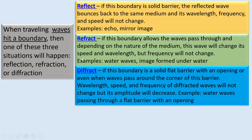A wave will diffract if the boundary is a solid flat barrier with an opening, or even when waves pass around the corner of the barrier. The wavelength, speed, and frequency of the diffracted waves will not change, but the amplitude will decrease. For example, water waves passing through a flat barrier with an opening.